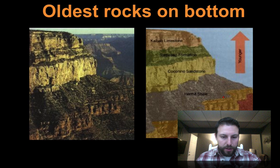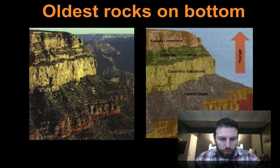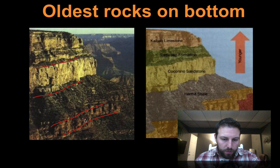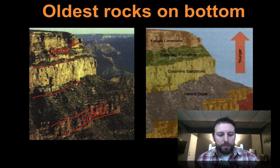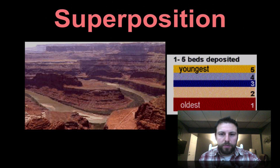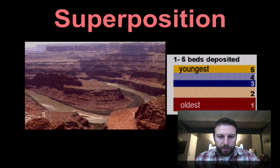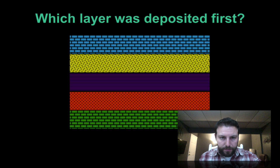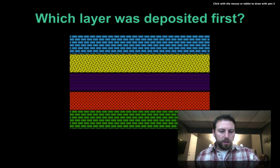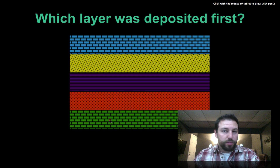Looking at rock outcrops, we can see a number of different rock layers. When doing rock correlation we look at color. We can see changes in rates of erosion, producing different layers with different colors. According to the principle of superposition, the oldest layer is on the bottom and youngest on top. This applies to the Grand Canyon as well — oldest layers on the bottom, younger as we move up. So the layer deposited first is at the bottom.